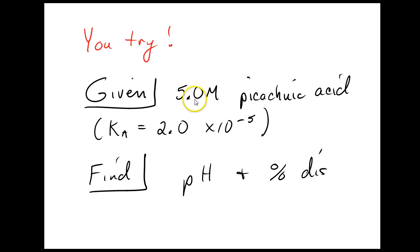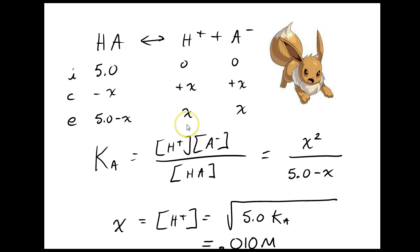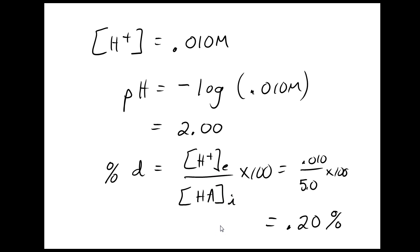You try one. Given 5 molar Pikachuic acid, Ka 2.0 times 10 to the negative 5th, find the pH and the percent dissociation. Pause here. Here's our solution. First, we're going to write down our equilibrium equation. Then we're going to icebox it. Initial change and equilibrium. And I'm going to write down the Ka expression in chemicals. Then I'm going to put in the x terms. Then I'm going to solve for x. And I check back up here, and I go, oh yeah, x is h plus in this problem. So I can get my h plus that way. And once I have h plus, I can get my pH and my percent dissociation.